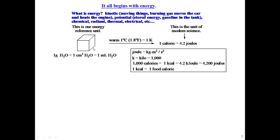We have a reference unit of energy: one gram of water, or one cubic centimeter, or one milliliter — all equivalent. If you warm that one degree Celsius, which is also 1.8 degrees Fahrenheit or one degree Kelvin, that requires one calorie of energy. The more modern unit is joules — one calorie equals 4.2 joules. If you have a thousand joules, you use the kilo prefix. So one kilocalorie, which is one food calorie, equals 4.2 kilojoules or 4,200 joules.